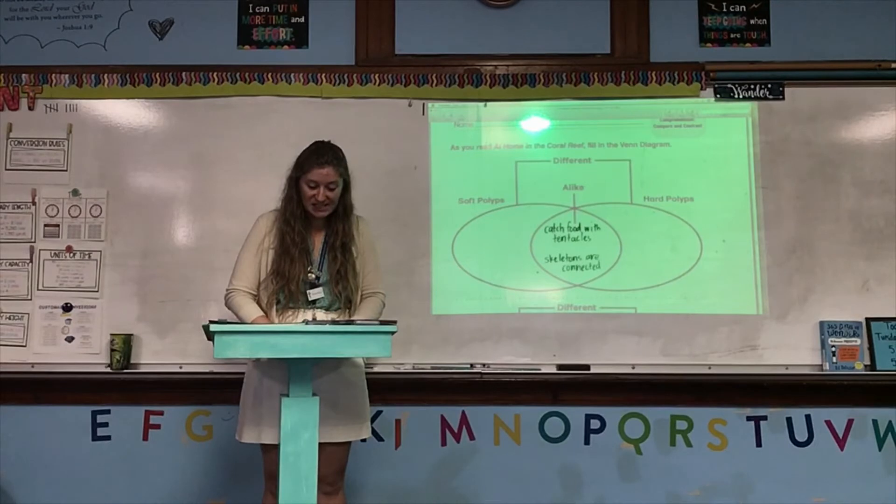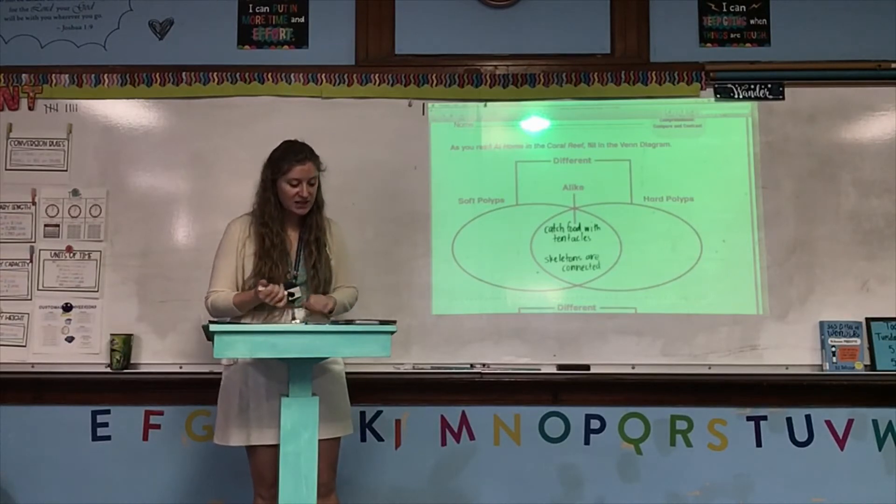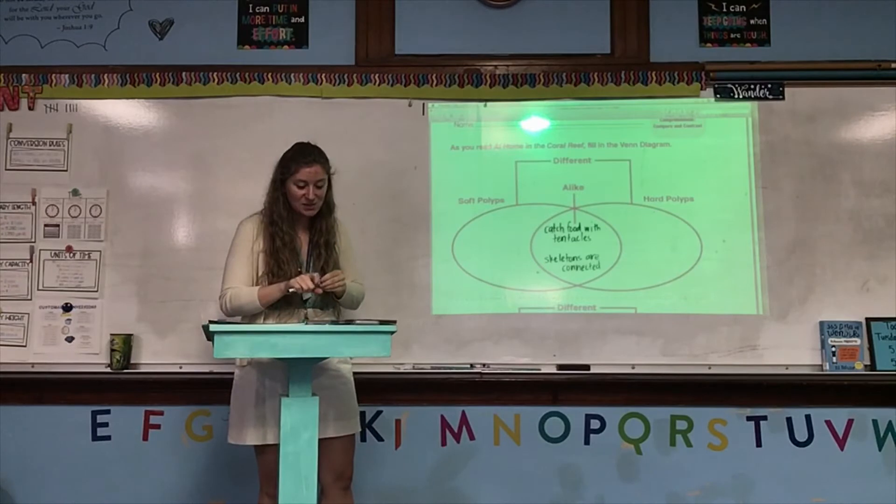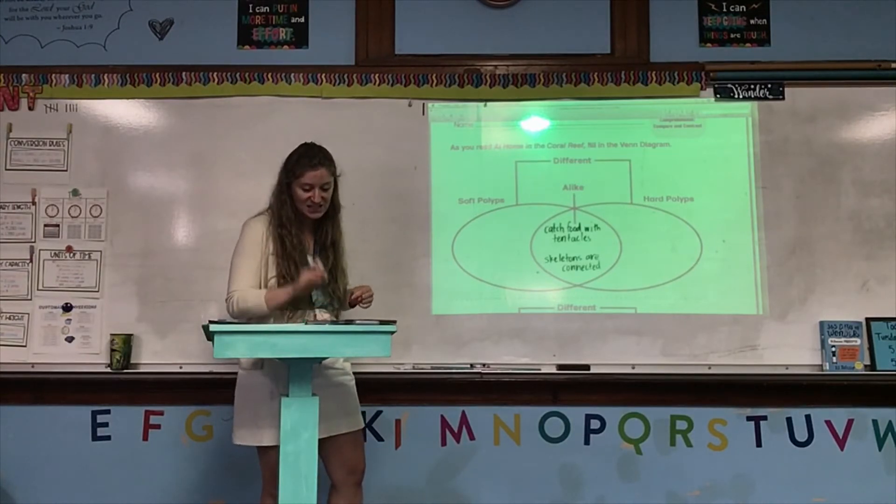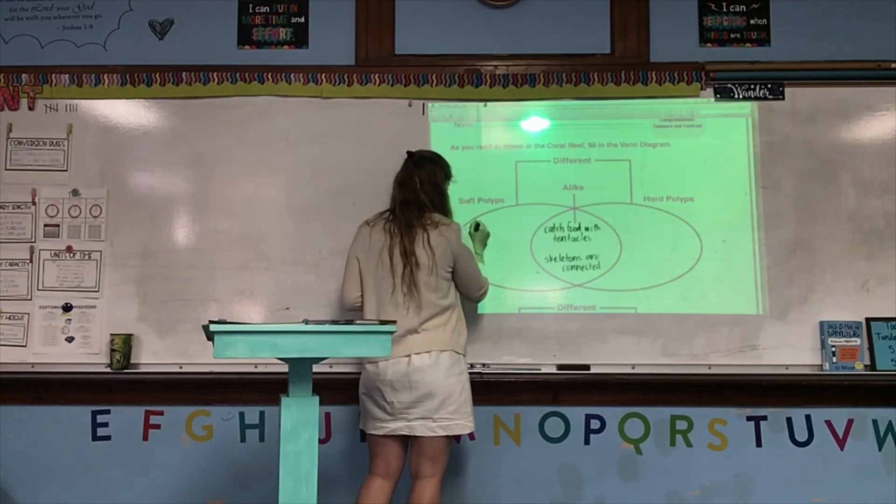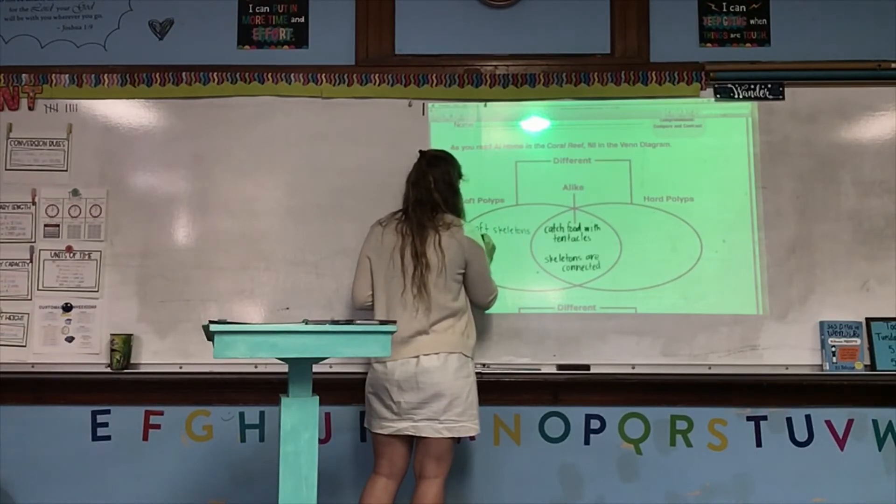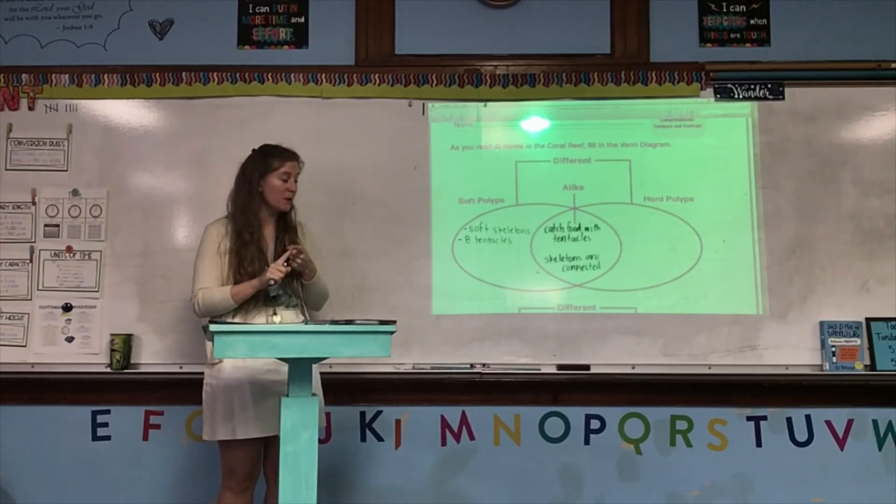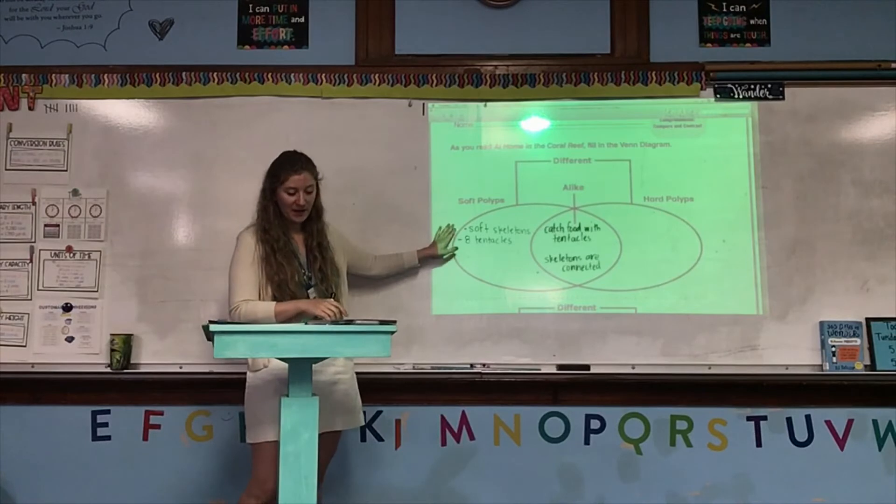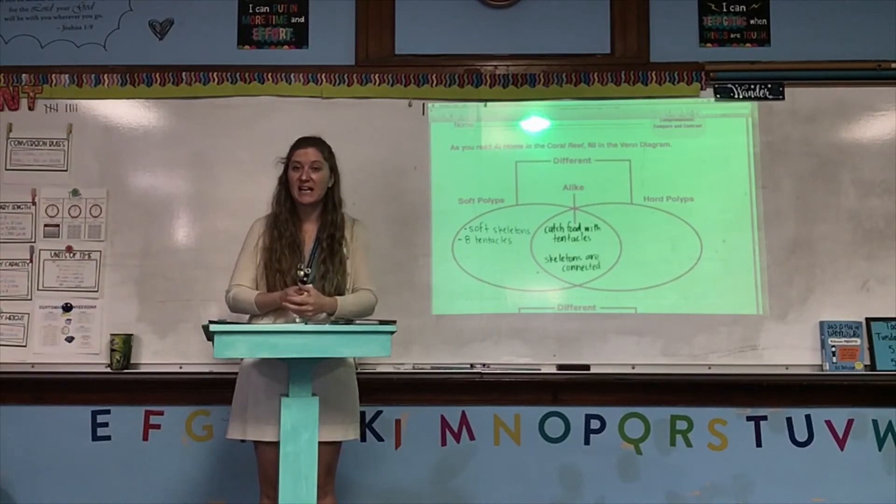Some kinds of coral polyps make soft skeletons that sway gently back and forth in the water. These polyps have eight tentacles. So, we know that those two sentences are probably about soft polyps since we know there are two types of polyps—soft polyps and hard polyps. And that was saying that some have soft skeletons. So, we know that is the first thing that is different about them. And that they have eight tentacles. So, while both types of polyps catch food with their tentacles and their skeletons are connected, the soft polyps have soft skeletons and only eight tentacles. Let's see if we see anything else about soft polyps and if we find anything new about hard polyps.